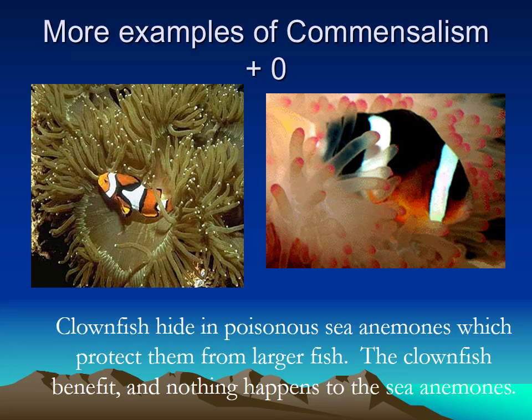Here's a clownfish that hides in the poisonous sea anemone. The clownfish gets a place to rest and protection from bigger fish, because if a bigger fish tries to eat the clownfish it will eat part of the sea anemone and be poisoned. The sea anemone doesn't really care that the clownfish is there — it's not helping or hurting it. This is commensalism: one gets something positive, the other gets absolutely nothing.